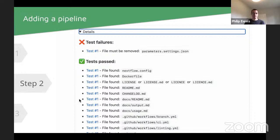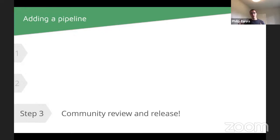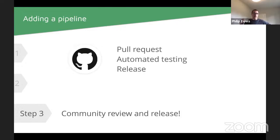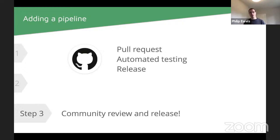Once your pipeline is written, tested, and working, the final step is coming back to the nf-core community for review and release. This happens via GitHub — we do a community review where we get people not involved in initial development to read through your code, make suggestions, and ask questions. Once that's sorted, you make a release, which kicks off a whole load of automated testing, website updates, and other automation generating identifiers and updating things all over the place.